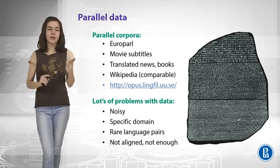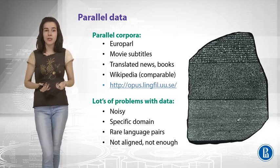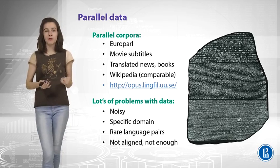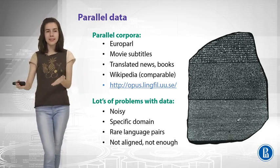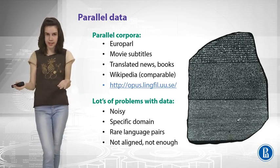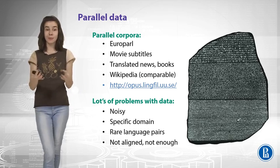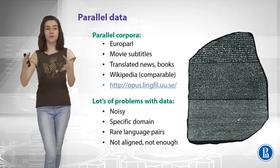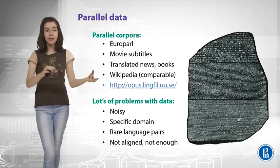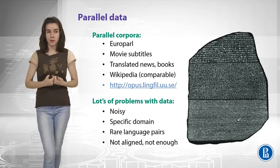First, the data usually comes from some specific domain. Imagine you have movie subtitles and you want to train a system for scientific paper translation — it's not going to work. You need to have some closed domain, or you need to know how to transfer knowledge from one domain to another.